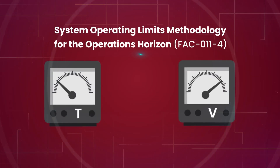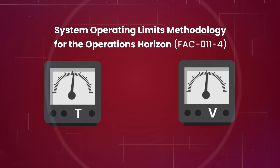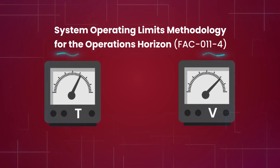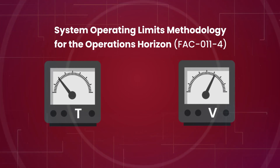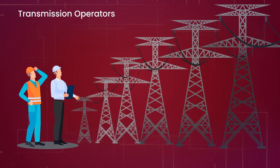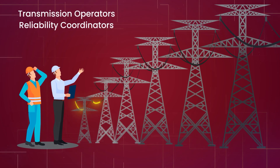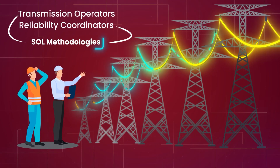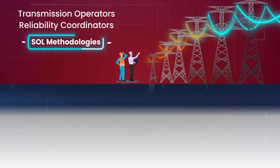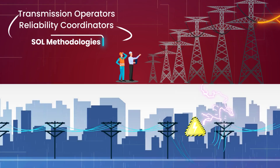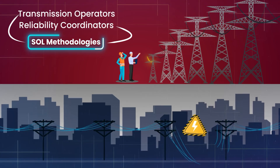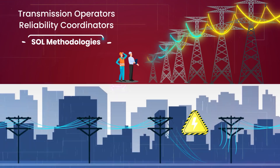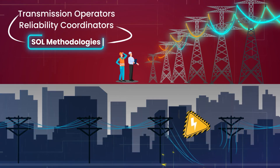System operating limits methodology for the operations horizon, FAC-011-4. This requires transmission operators and reliability coordinators to establish SOL methodologies, defining BES operating limits under normal and contingency conditions, ensuring consistent system reliability.